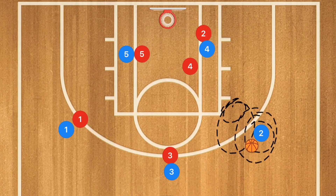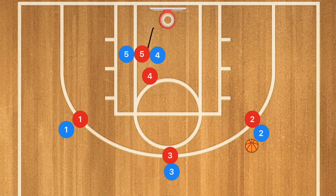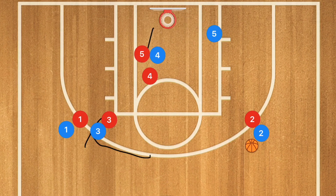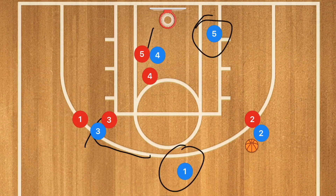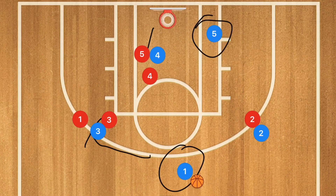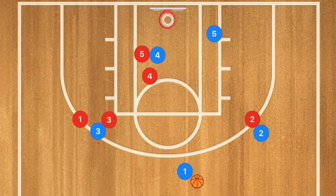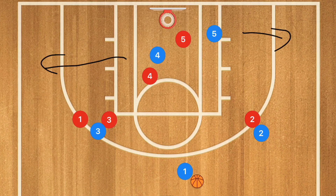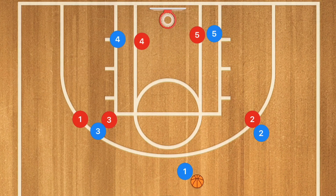If player 2 is open, I want him taking that shot. If he is not open and player 2 red is guarding player 2 blue, I want player 4 to set a screen across to player 5 and player 3 to set a screen for player 1. At this time player 2 has two different options — he can either hit player 5 in the low post or player 1 at the point. If he hits player 5 in the low post, player 5 needs to go up for that shot. If he hits player 1, player 1 needs to go up for that shot, or you can set up either a 5-out motion offense or a 3-out 2-in motion offense.